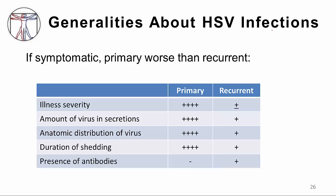In primary infections, virus is shed from multiple locations — for example, in a genital infection in a woman, it may be shed from the vagina, cervix, and perirectal area. With recurrent infections, virus is shed from a small area. The number of days of shedding is longer with primary infections — five or six days or more — versus only one or two days with recurrent infections. By definition, there is no antibody present in primary infection, whereas antibody is present in recurrent infection. It is this presence or absence of antibody that's responsible for the differences between primary and recurrent infections.